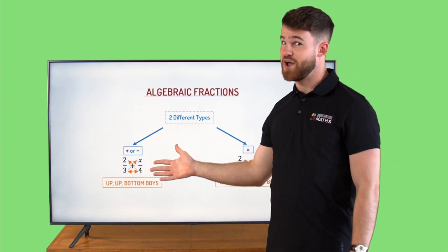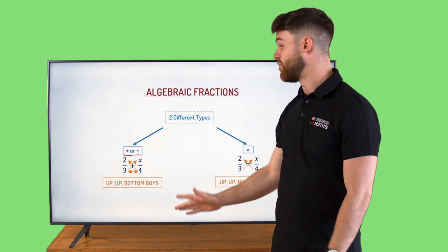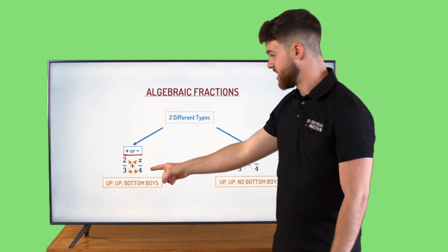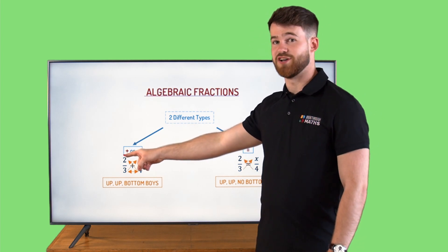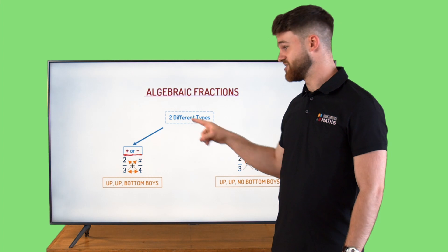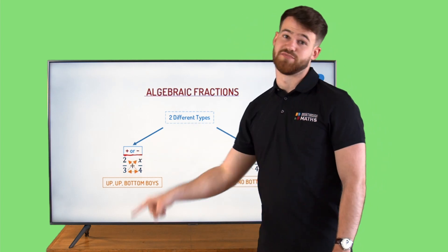If there's a plus or minus in the middle we do what's called up-up-bottom boys. That means we multiply the bottom here up a crisscross to the top, the bottom here another crisscross over to the other side, and then multiply our bottoms together as well.